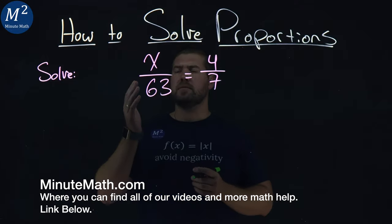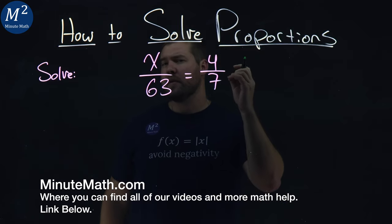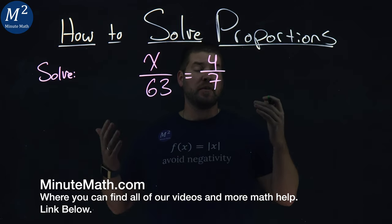We're given this problem right here. Solve x over 63 equals 4 over 7. We want to solve this proportion.